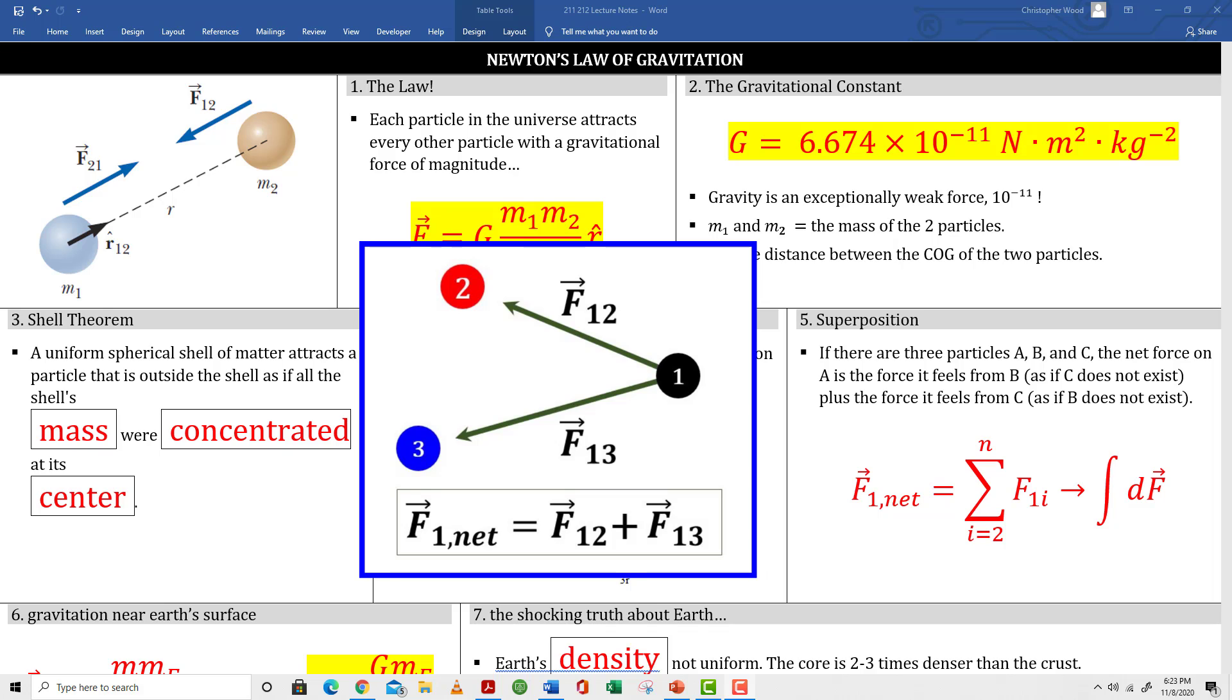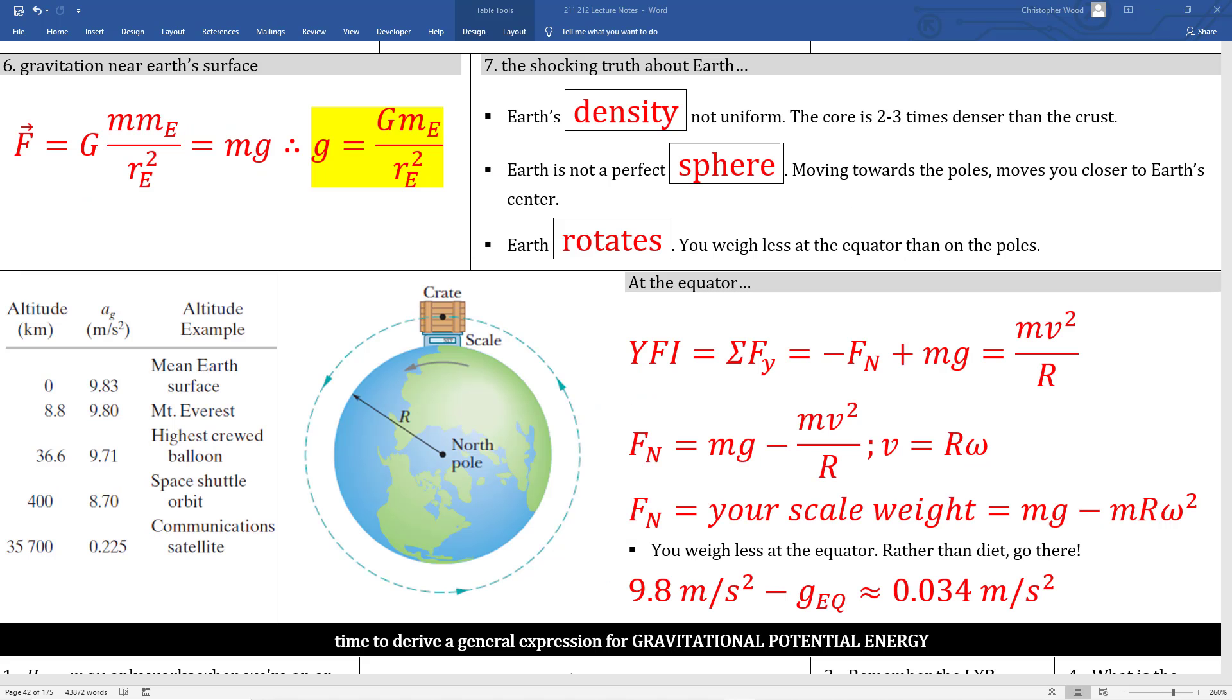Box 5, Superposition. We've taken this approach before. It basically says if you have three or more objects, you analyze them as pairs and sum them together. Box 6 shows where g comes from. We've always used g equals 9.8 meters per second squared, but now we know where it really comes from. You can see the gravitational force you feel on the surface of a planet depends on the planet's mass and size.